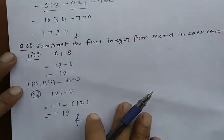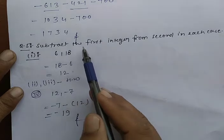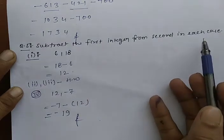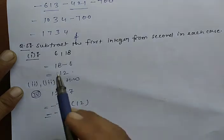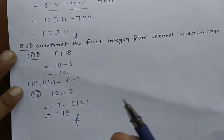Next question is question number 5: subtract the first integer from the second in each case. First integer from second to subtract: 18 minus 6, that is 12. That is very easy.